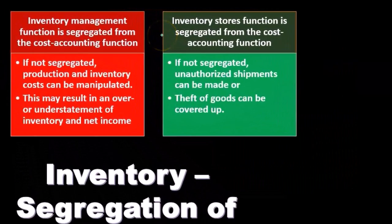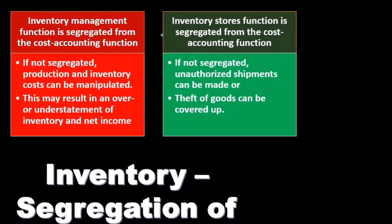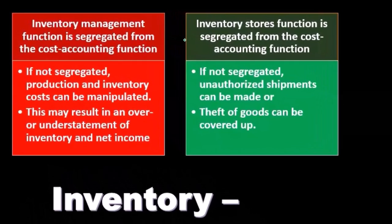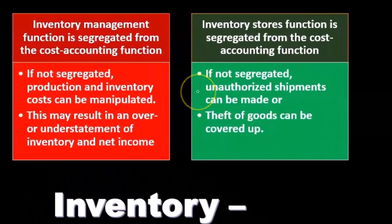The next segregation: the inventory stores function is segregated from the cost accounting function. If they weren't segregated, unauthorized shipments can be made. Having one person involved in both of those areas means we can have unauthorized shipments.